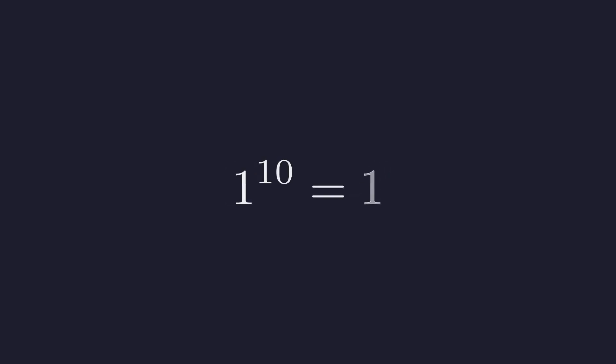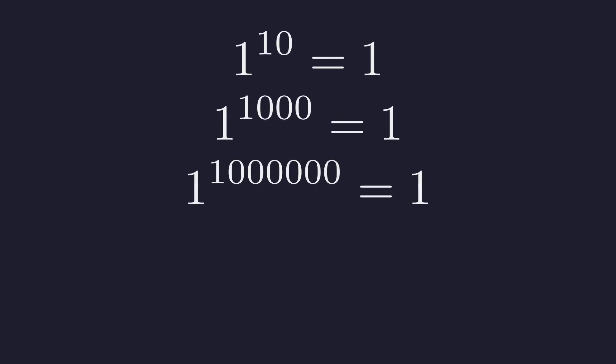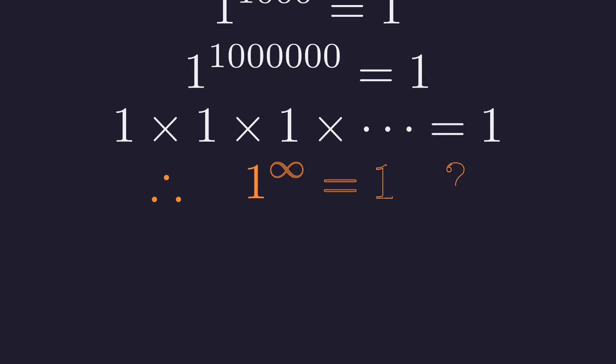We know 1 to any finite power is 1. 1 to the thousandth power, still 1. 1 to the millionth power, 1 again. The pattern is clear. 1 multiplied by itself, any number of times, is always 1. So logically, 1 to the power of infinity must equal 1. This seems completely solid.